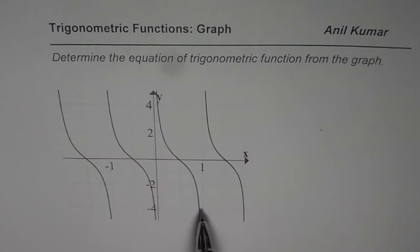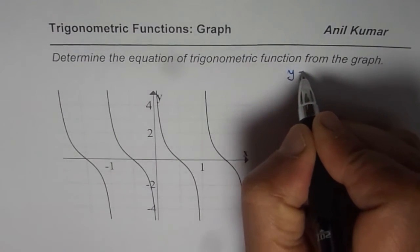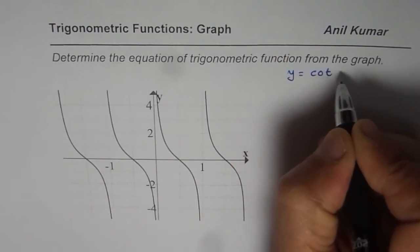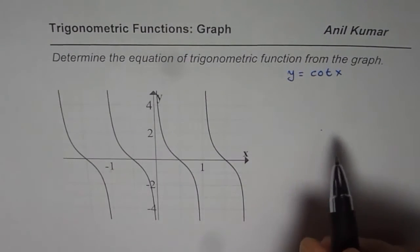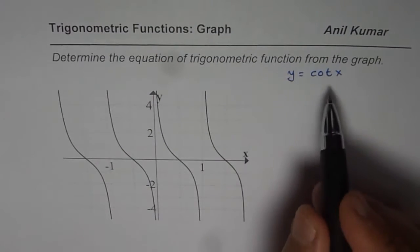Now since the graph is always decreasing, it seems to be graph of y equals cotangent of x. So we will try to find what particular values are there for the cotangent function.